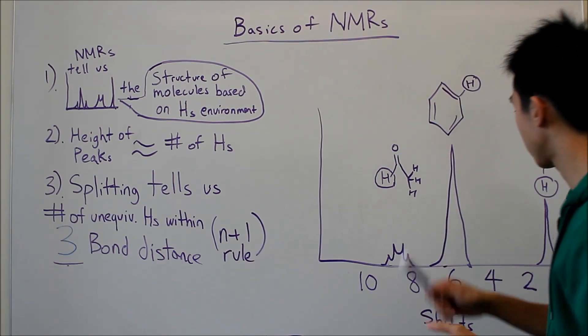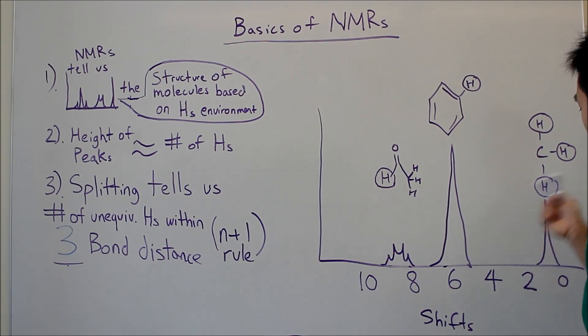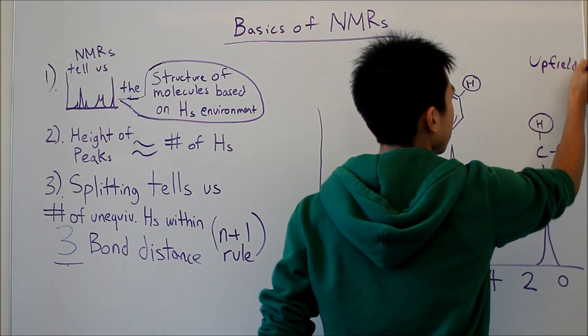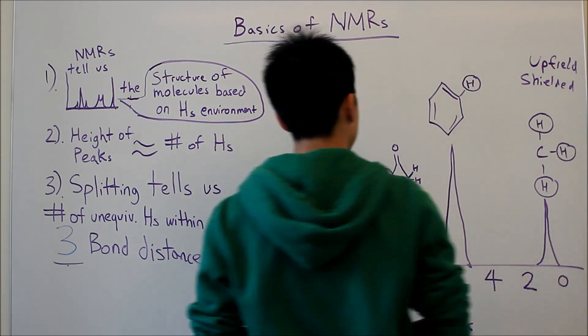So if there is a high amount of electrons shielding the proton, then it will probably be in this area here. We call this area upfield. Upfield, and this area has shielded protons, like these guys.